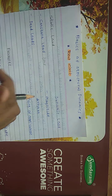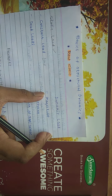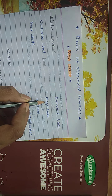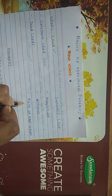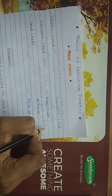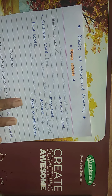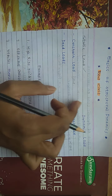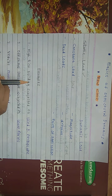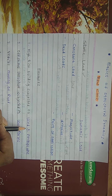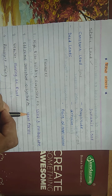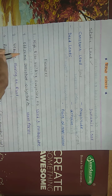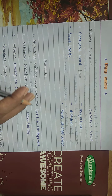Next is dynamic load. Dynamic loads are loads whose intensity, magnitude, direction, or point of application varies with time. Examples include: high-rise buildings subjected to wind and earthquake, offshore structures subjected to wave forces, vehicles moving on roads, and aeroplanes flying.